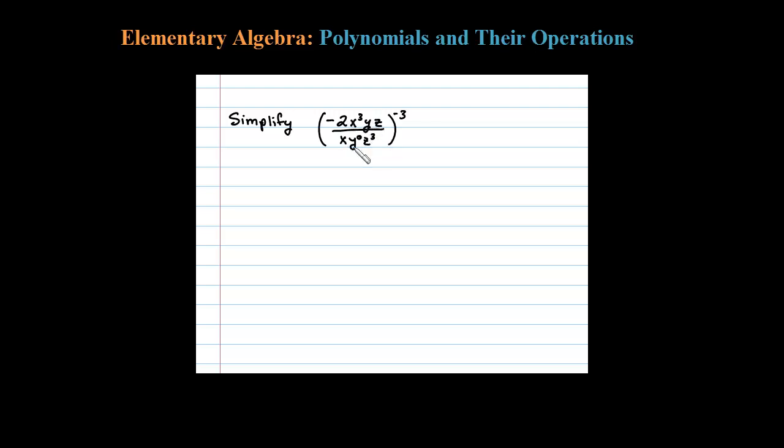What I like to do first with these is simplify inside the parentheses first. The first thing I notice is that I can cancel an x, leaving me an x squared in the numerator. Y to the 0, well that's just 1, and then one of these z's can cancel and I'll be left with a z squared in the denominator.